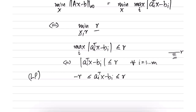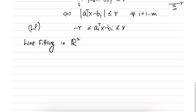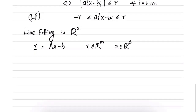The same idea is applicable to more complicated examples. Let us say we are in R^2 because it is easier to visualize. The residuals are given by r = Ax minus b, where r is m-dimensional and x is two-dimensional. Since x is two-dimensional, A is in R^(m×2).